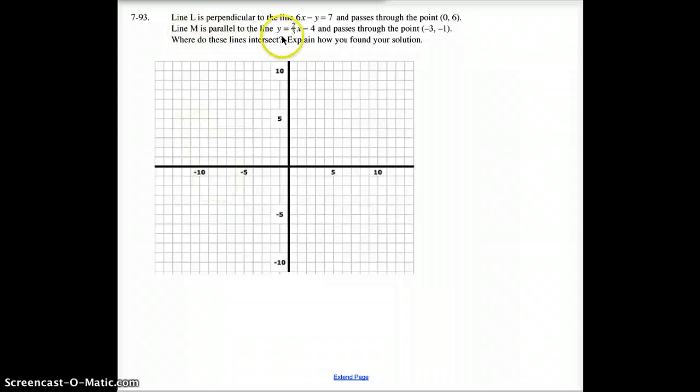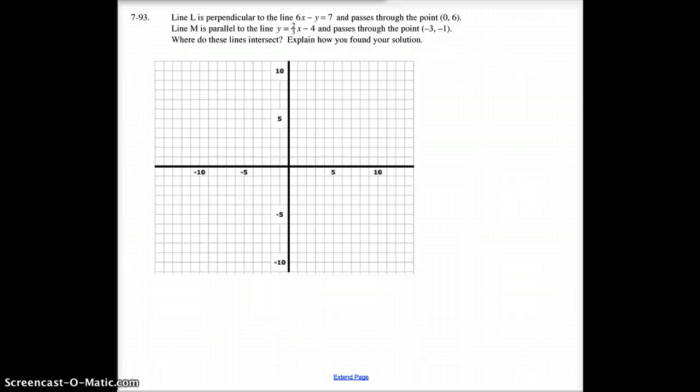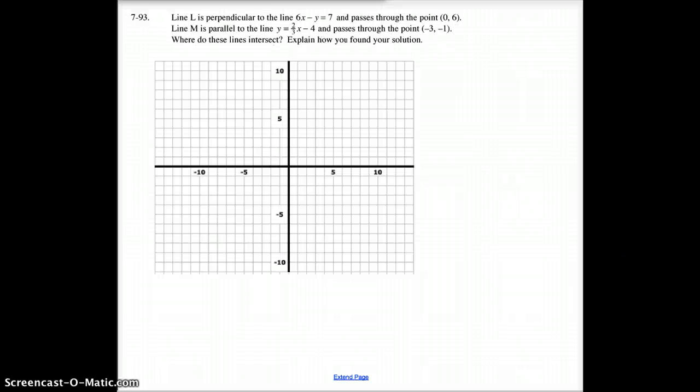Then, line M is parallel to the line Y equals 2/3 X minus 4, and passes through this point. Parallel, you should now know what the slope means for that. So, apply that slope, apply your XY coordinates, and solve for your B and get your new equation. So, you're finding two new equations. You're going to graph these two lines, the two new lines. After you've graphed them, those two lines will cross each other at some point on this graph. I want you to find that intersection point in XY format, so make sure you do that. If you needed to, by the way, pause the video back here, and finish that, then move on.